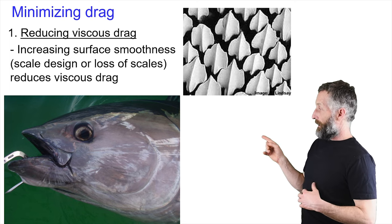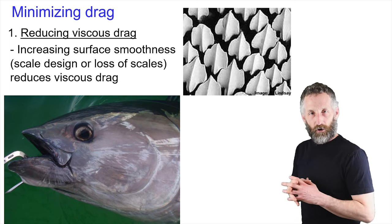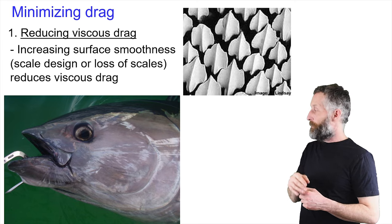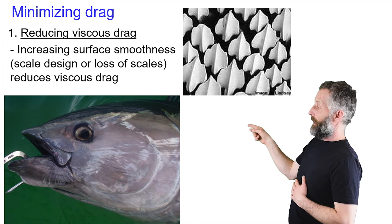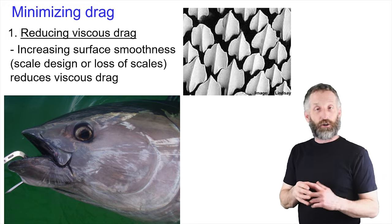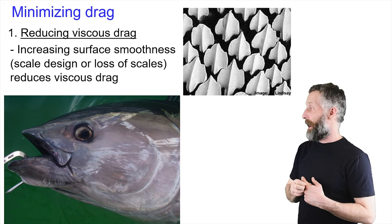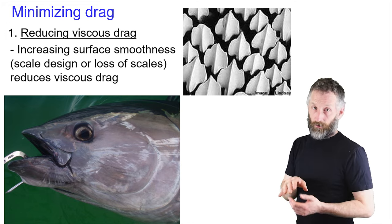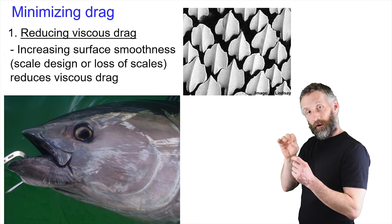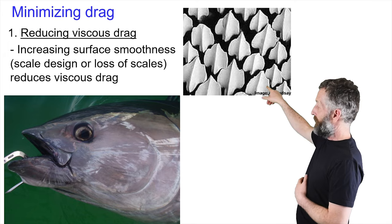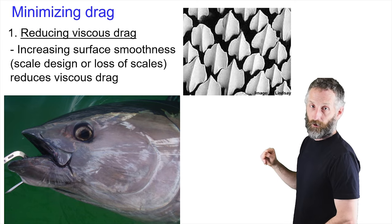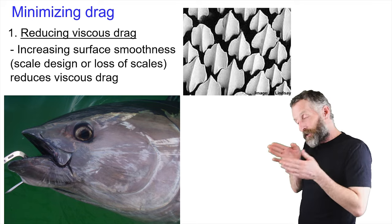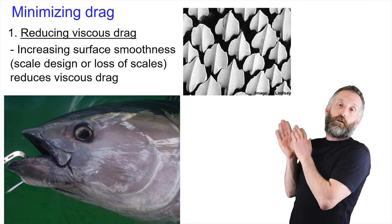The first is viscous drag, which is basically the same as frictional drag — rubbing on the outside surface of the fish as it moves through the water. From an evolutionary perspective, fish combat viscous drag by increasing surface smoothness: by getting rid of scales altogether, or, if they retain scales, making sure their axis is aligned with the water, as you see in the placoid scales on the upper right. That just makes it smoother and easier moving through the water.